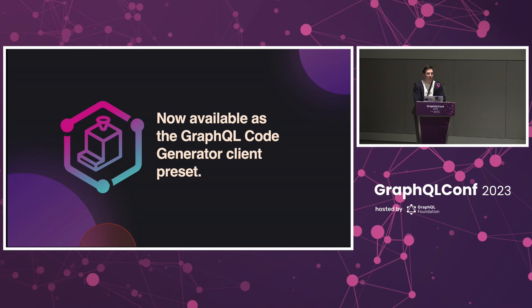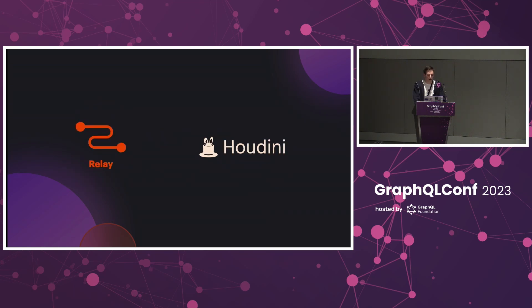This is now available as the GraphQL code generator client preset. If you're not aware of it yet, I highly recommend you check it out if you're using GraphQL code generator for applications. Furthermore, there's even more beyond that — you should definitely check out Relay and Houdini, because instead of only generating types for your GraphQL API, they can generate much more, like refetch logic and so much more.